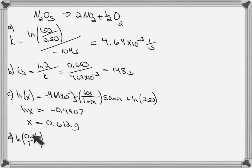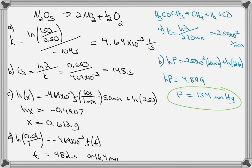So that'll be the natural log of the amount at time t divided by the amount at time zero equals negative k multiplied by t. We can then rearrange the equation and solve for t, 982 seconds or 16.4 minutes.